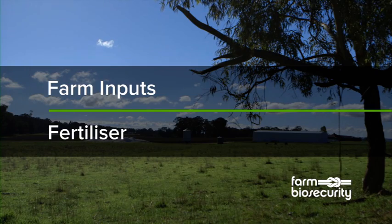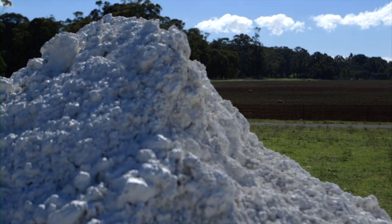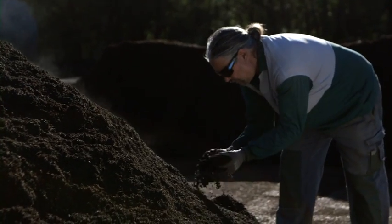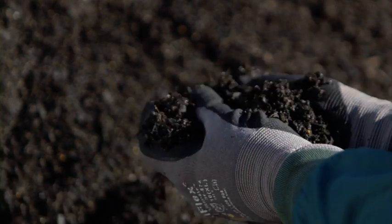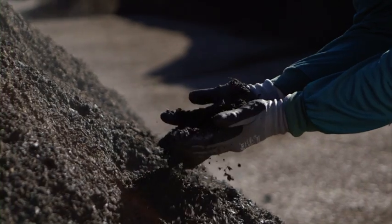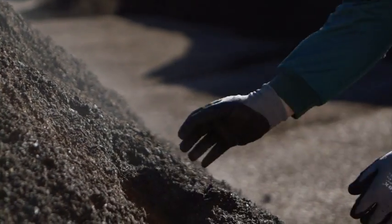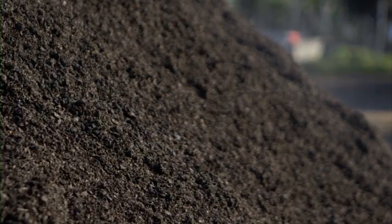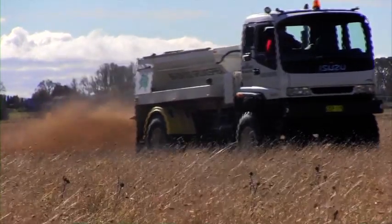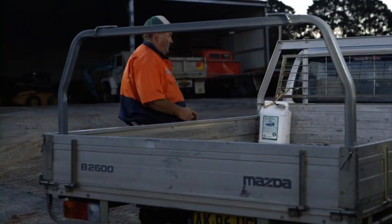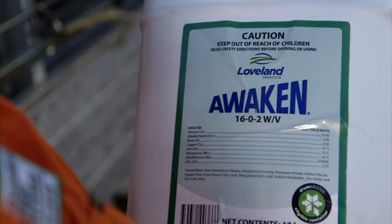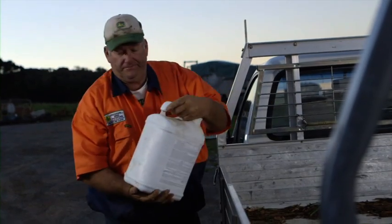Organic-based fertiliser can carry weed seeds as well as pests and diseases. Seeds and diseases can survive in compost for a long time, so make sure animal manure and green waste is aged and thoroughly composted before use. Maintain a record of the source of organic fertilisers and application dates. Reduce the risk of purchasing contaminated or non-compliant fertiliser by ensuring the supplier is following the industry purchasing code of practice or has equivalent quality controls in place.